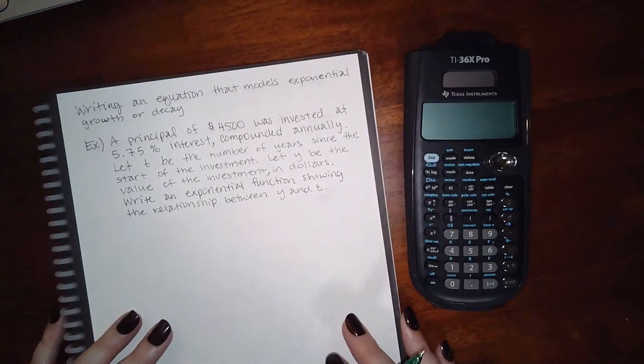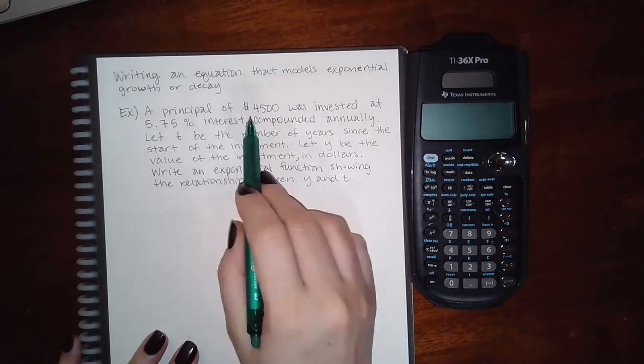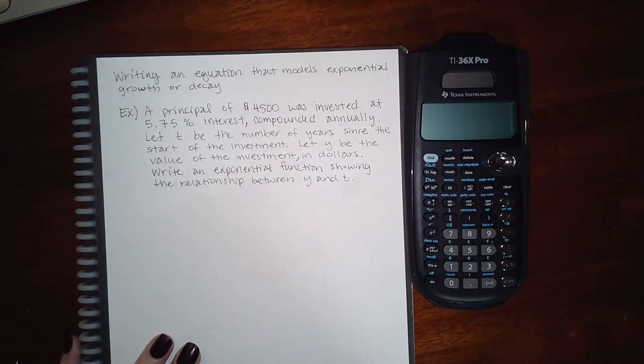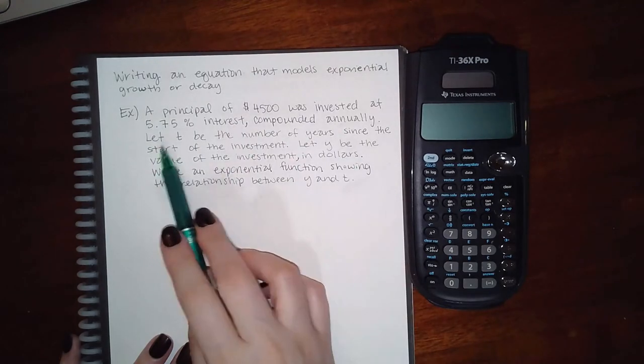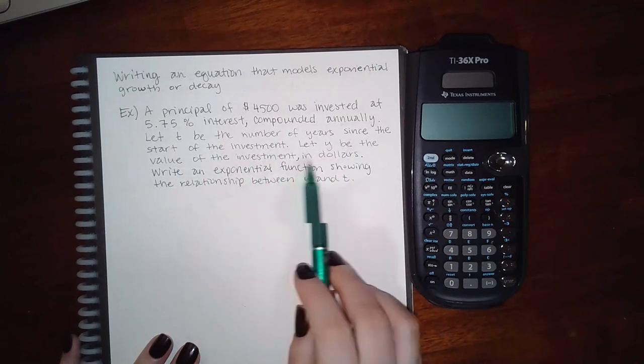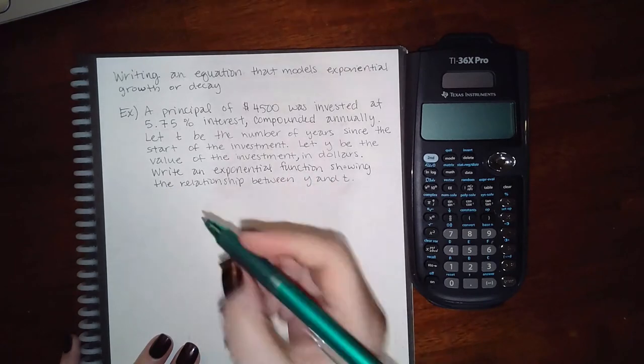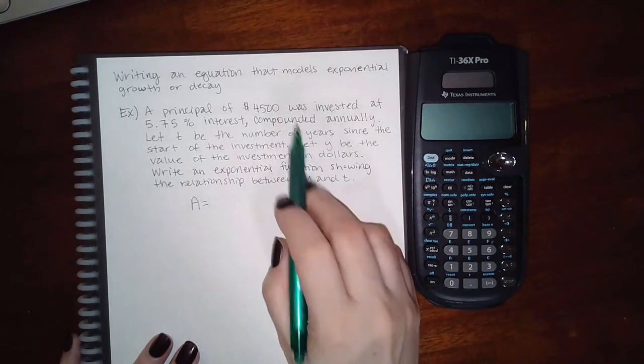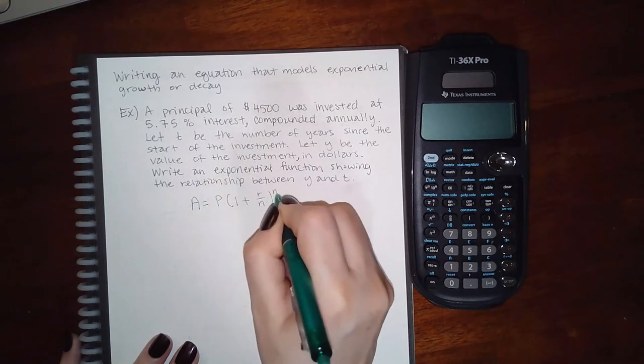Now let's look at another topic: writing an equation that models exponential growth or decay. The principal here is $4,500 and was invested at 5.75% interest compounded annually. Let t be the number of years since the start of the investment. Let y be the value of the investment in dollars. Write an exponential function showing the relationship between y and t. It's compounded annually, not continuously, so you would use the same formula that you used before.